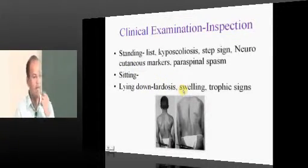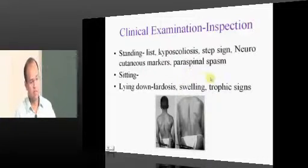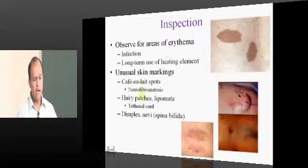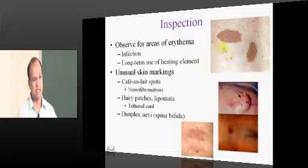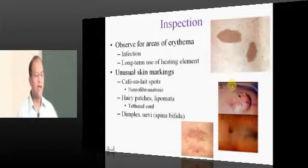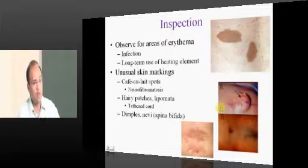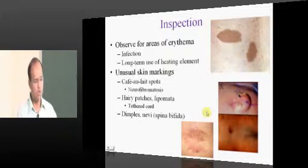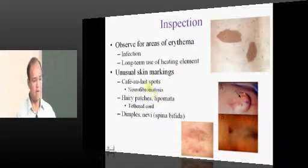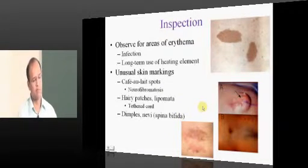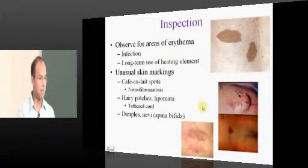All those postural changes occur, but to identify them you must first strip the patient and clinically examine. Look for neurocutaneous markers — superficial markers like café-au-lait spots and abnormal hair, which can indicate a bony problem or spinal cord problem underneath. Never forget to look for these neurocutaneous markers: hairy patches, lipomata, and café-au-lait spots. They can lead you to spina bifida or some other spinal problem.